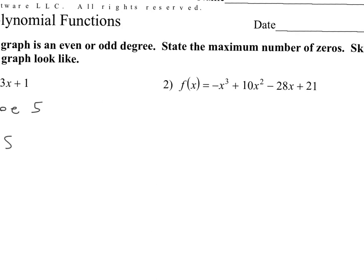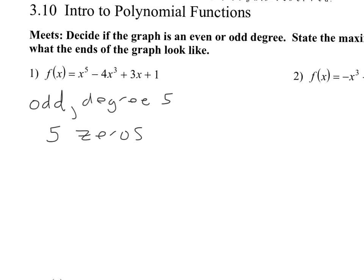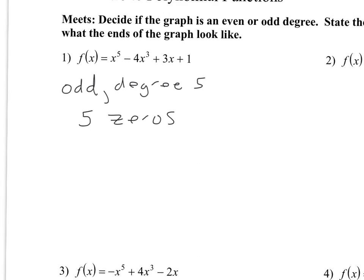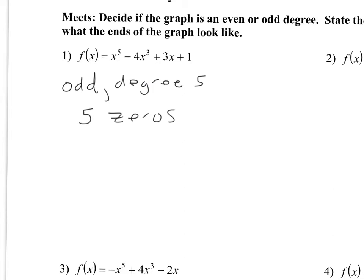State the maximum number of zeros — it's five. It actually does have five zeros. They might be repeated, they might be imaginary, but mathematically it will have five zeros. Whether it crosses the graph five times depends on whether they're imaginary or whatever. The last thing: sketch what the ends of the graph look like — that's our new thing. When a polynomial has an odd power, it's either going to start down and end up, or start up and end down.